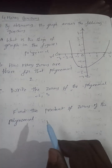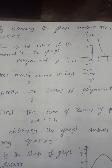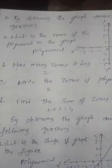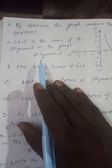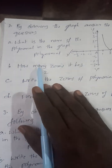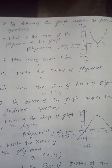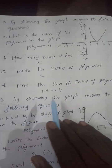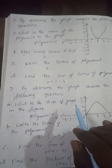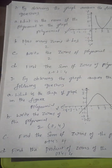The product of the zeros: minus two into three equals minus six. The name of the polynomial graph — how many zeros? Two zeros. Sum of zeros: two plus two. Thank you, please subscribe.